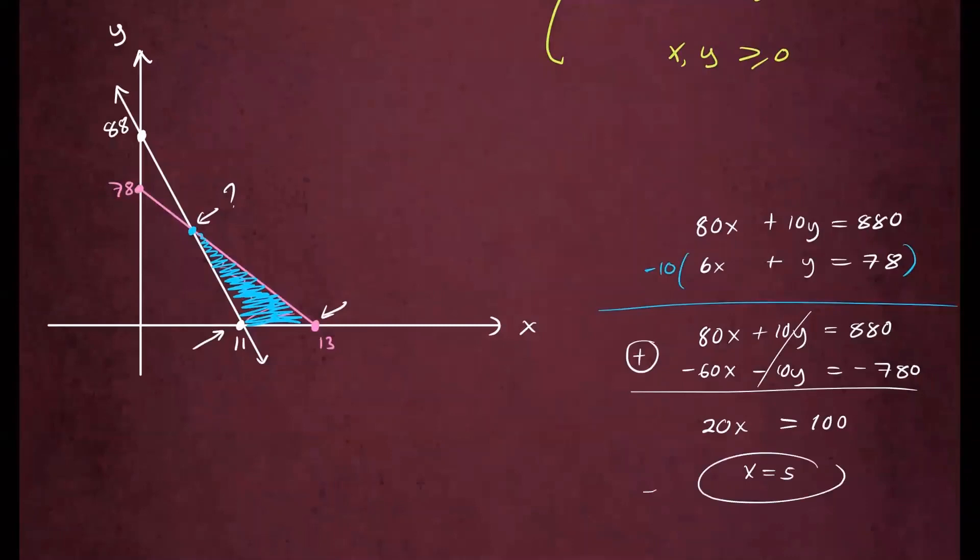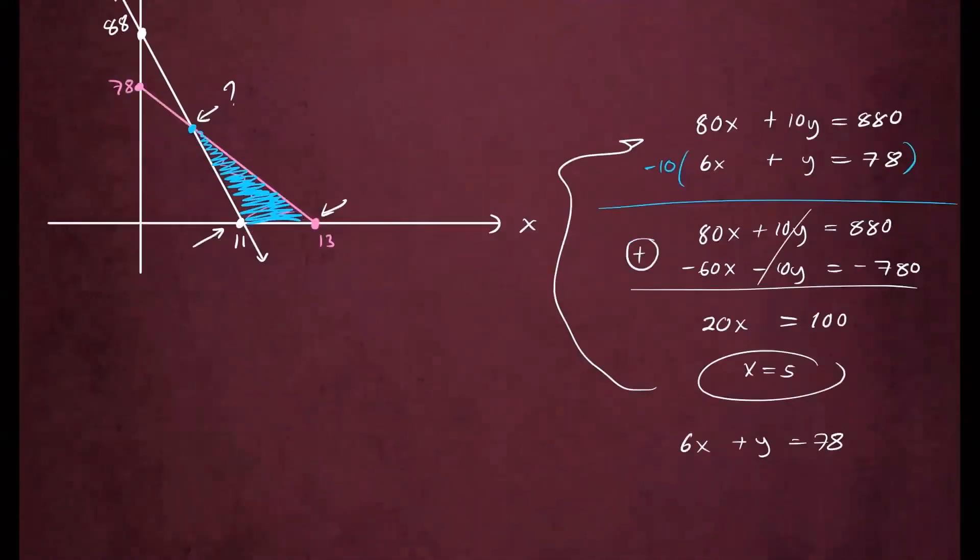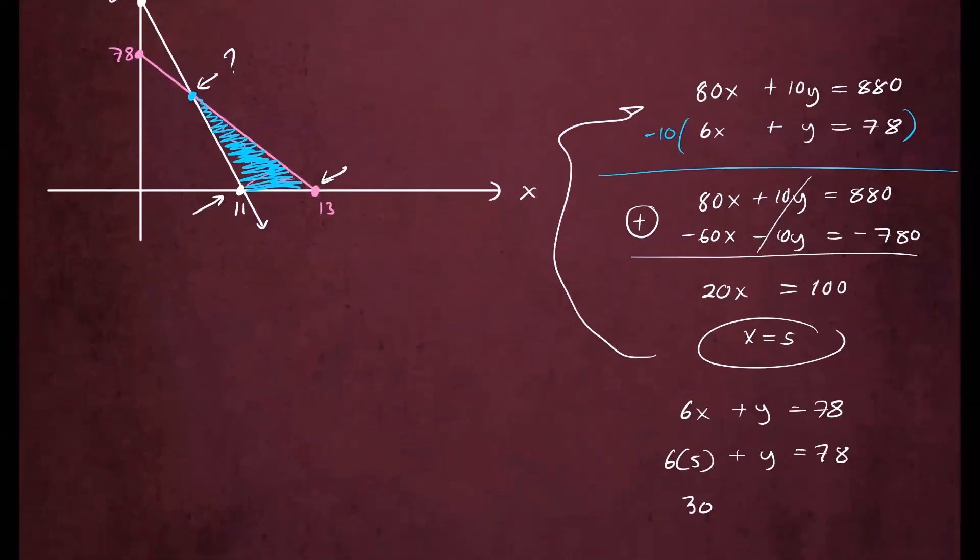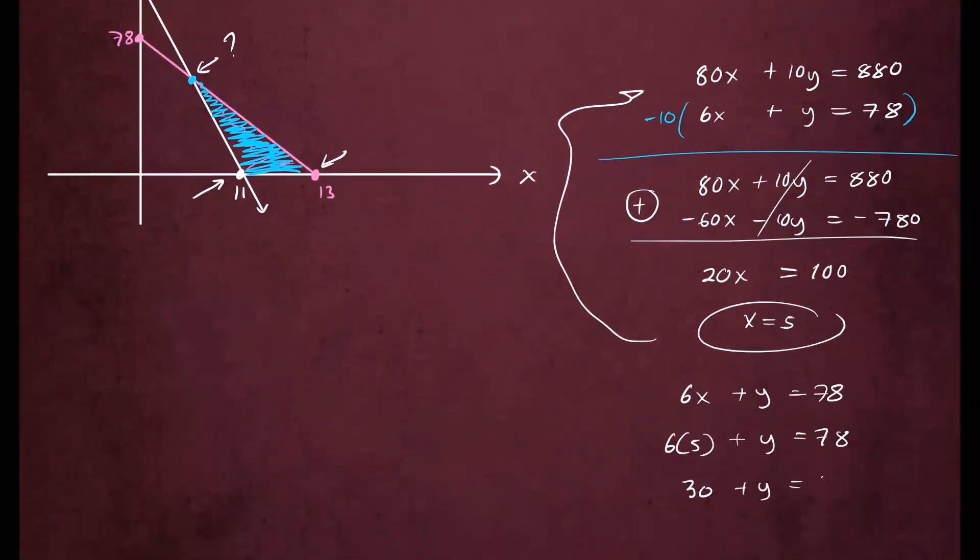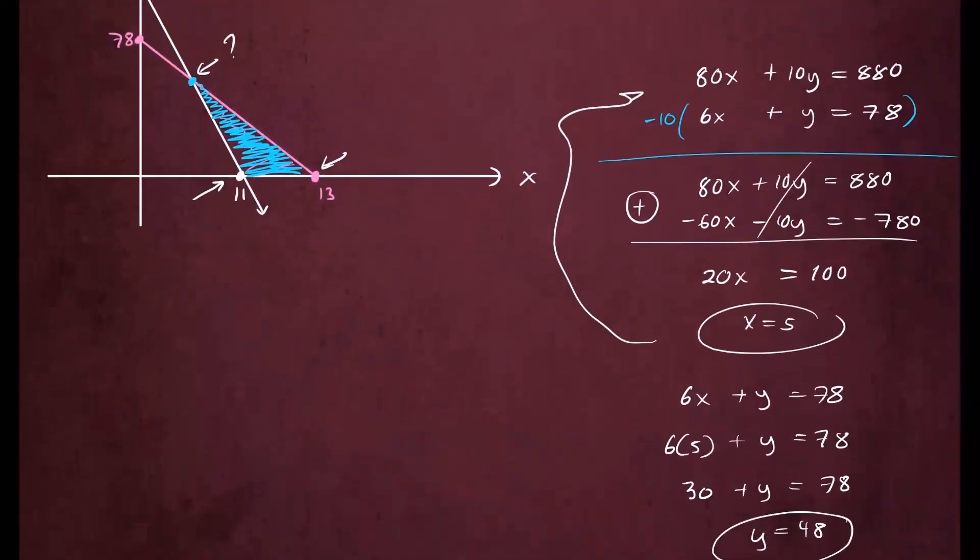And now that we have x, we can plug this into any of these equations to find y. I'll use the bottom one, 6 times x plus y equals 78. Plug in the x value of 5. So 6 times 5 plus y equals 78. And then 6 times 5, that's 30. Plus y equals 78, which means y equals 48. Wonderful. So we know our point, this corner point is (5, 48).